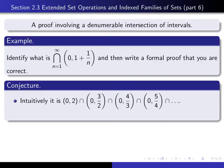If we write out a few terms in the intersection: corresponding to n=1, it's the open interval from 0 to 2. Corresponding to n=2, it's 1 plus one-half, which is 3/2, so the open interval from 0 to 3/2. If n=3, 1 plus one-third is 4/3, so it's the open interval from 0 to 4/3, and so on.